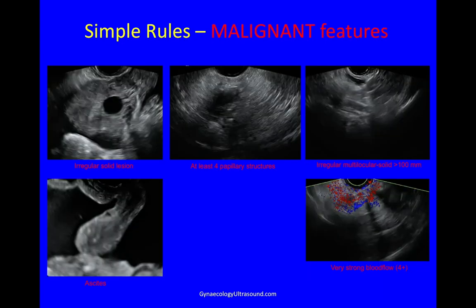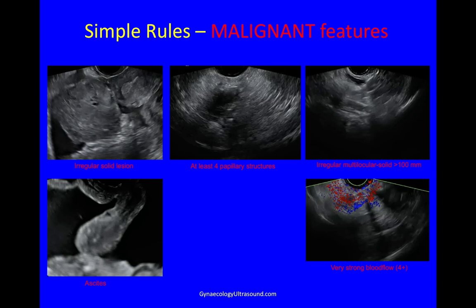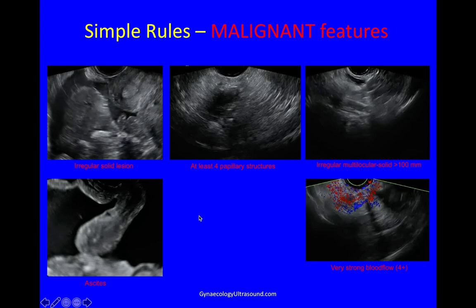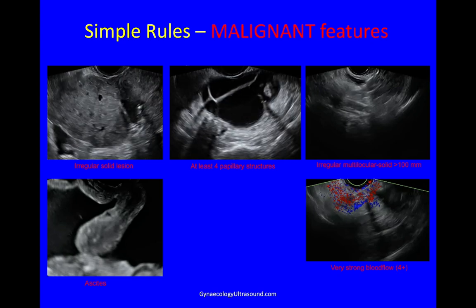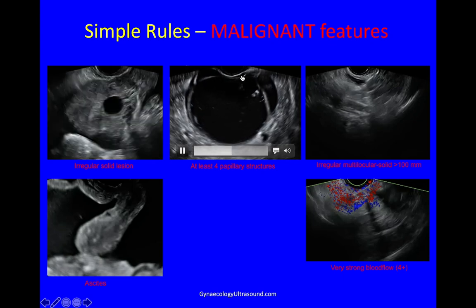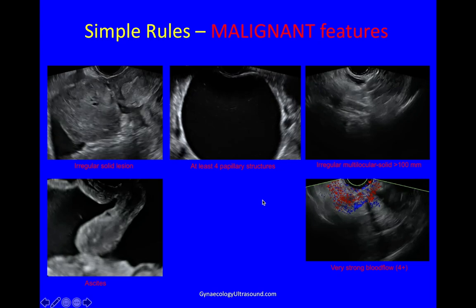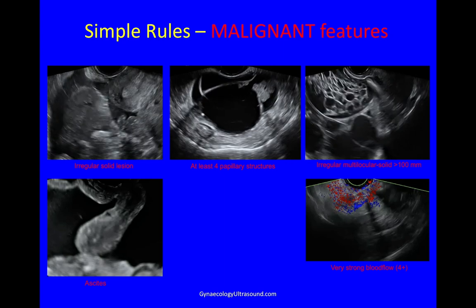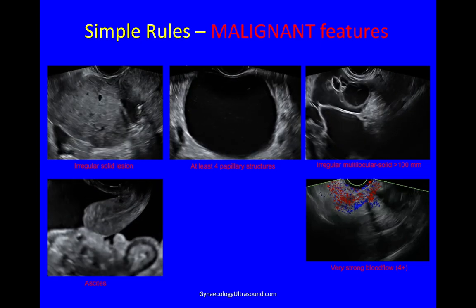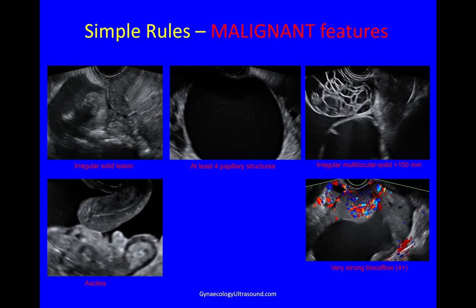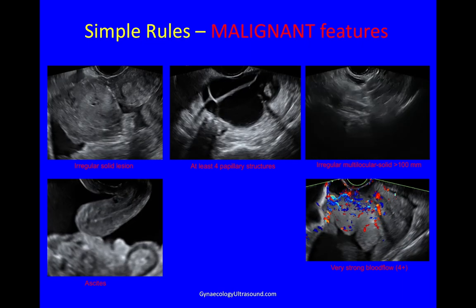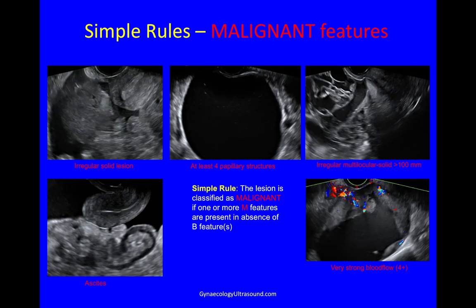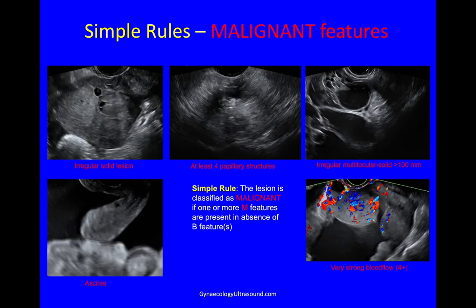Five malignant features: an irregular solid lesion — at least 80% solid with an irregular outer contour and irregular internal cystic spaces. The presence of at least four papillary structures — solid material more than 3 mm in height, indenting the cyst, fluid on three sides. A mass that is irregular, multilocular, solid and more than 10 cm. The presence of ascites. And the presence of very strong blood flow at a PRF of 0.6 — variable but very strong in areas. The lesion is malignant if there are one or more malignant features in the absence of benign features.